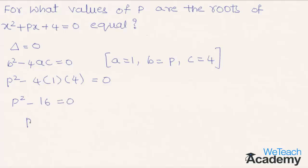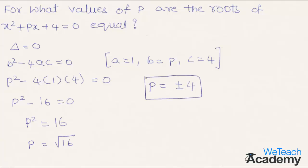Transferring minus 16 to the other side, we get p squared equal to 16. Taking the square root of both sides, we get p equal to plus or minus root of 16. Since 16 is a perfect square, its root is plus or minus 4. So the values of p are plus or minus 4, and when p equals plus or minus 4, the roots of the quadratic equation are equal.